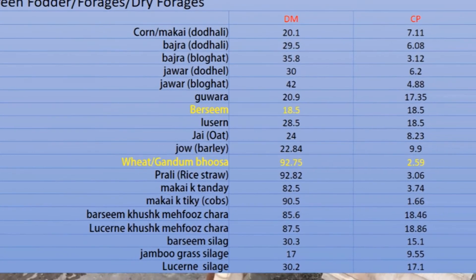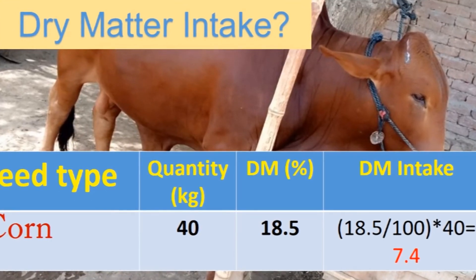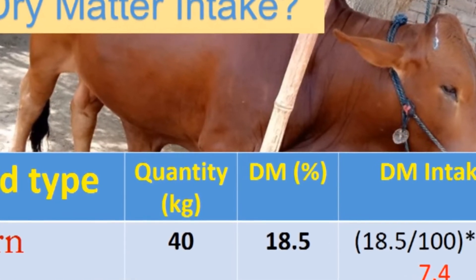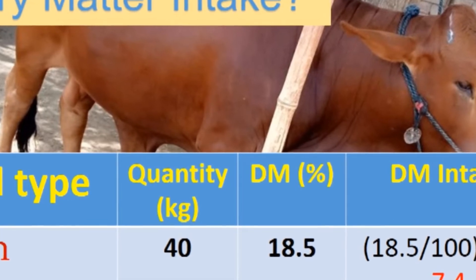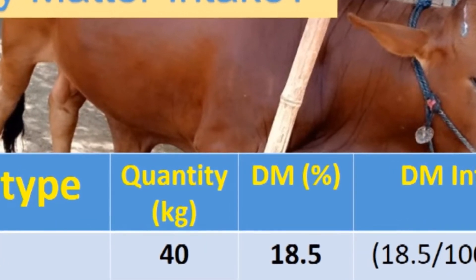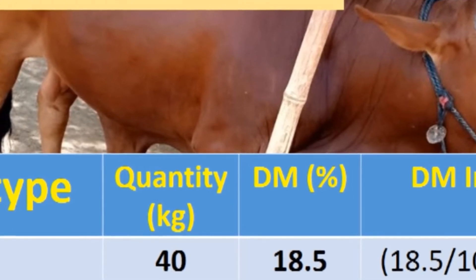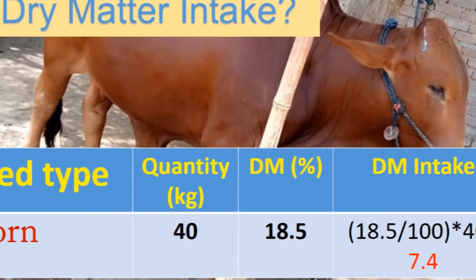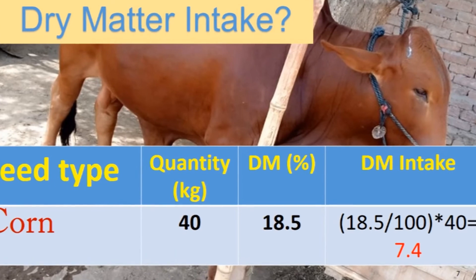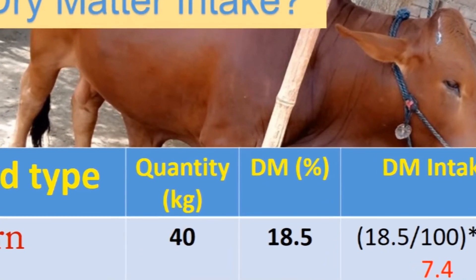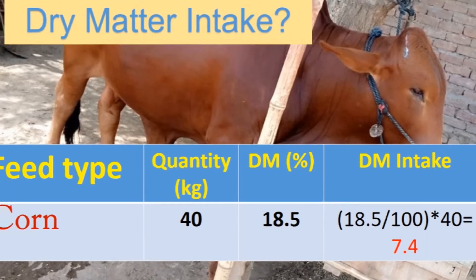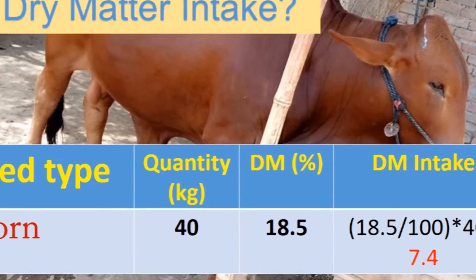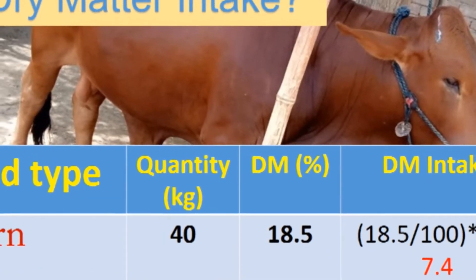For example, if we are feeding 40 kg of corn fodder with a dry matter content of 18.5%, we calculate: 18.5 divided by 100 gives the dry matter proportion per kg. Multiplying this by 40 kg gives a dry matter intake of 7.4 kg. So 40 kg of fresh corn fodder equals 7.4 kg on a dry matter basis.